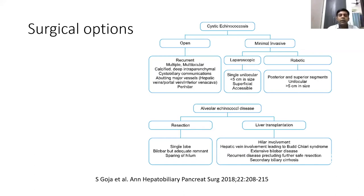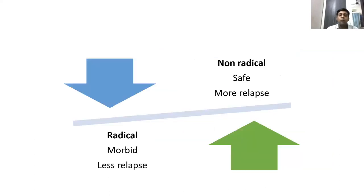Alveolar echinococcal disease is treated by resection when fairly localized to a single lobe, sparing hilar structures. Advanced disease with biliary cirrhosis, vascular involvement causing Budd-Chiari, or extensive bilobar involvement may require liver transplantation in selected cases. Radical surgery has the advantage of very low relapse rates, though it is morbid and technically difficult.